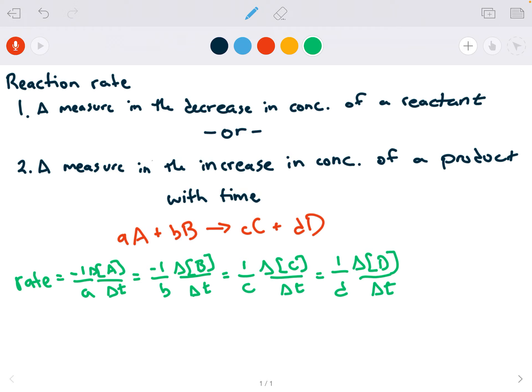And again, that's because there are two moles of C for every one mole of A, B, or D. And that's what this reaction equation and the equation for the rate are telling you.